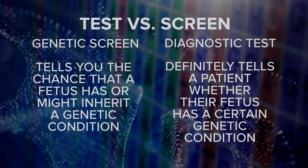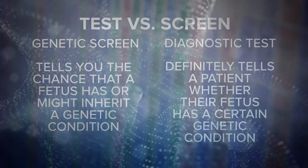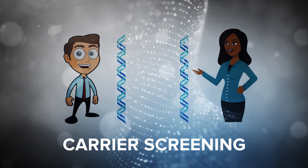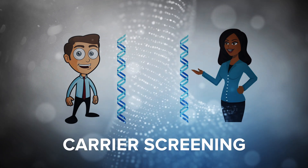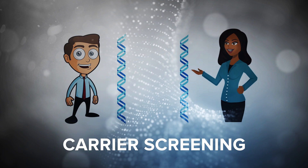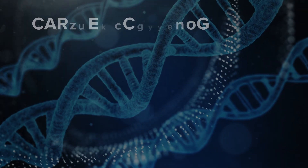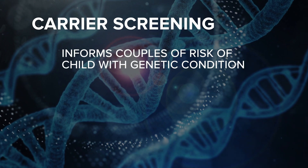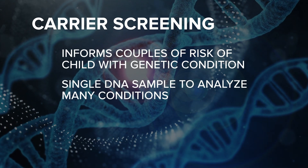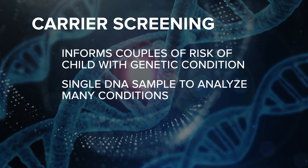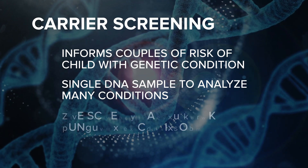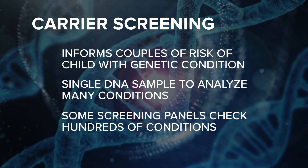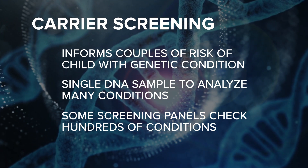Let's talk about some of the different methods used for genetic screening. Carrier screening can be done either before a couple gets pregnant or early on in the pregnancy, to inform couples whether they carry a gene for an inherited condition that could potentially be passed on to their children. Carrier screens use a single DNA sample to analyze a person's genome for many different conditions, and some screening panels offer analysis of hundreds of conditions to people from any ethnic background, with or without prior family history of a genetic condition.